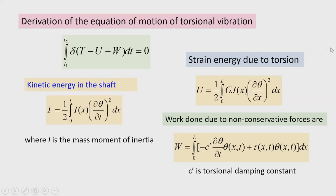Now let us derive the equation of motion using Hamilton's principle: the time integral of δ(T − U + W) = 0, where T is kinetic energy, U is strain energy, and W is the work done due to non-conservative forces. T − U is the Lagrangian L. The kinetic energy of the shaft is T = (1/2)∫₀ˡ Ix·(∂θ/∂t)² dx, where ∂θ/∂t is the angular velocity.